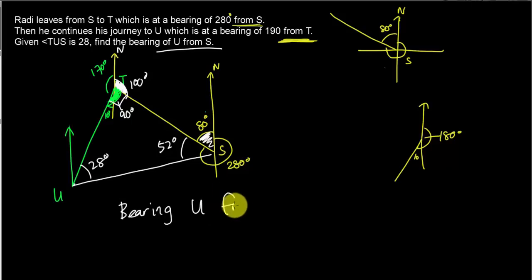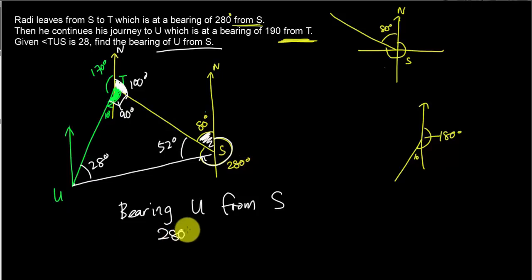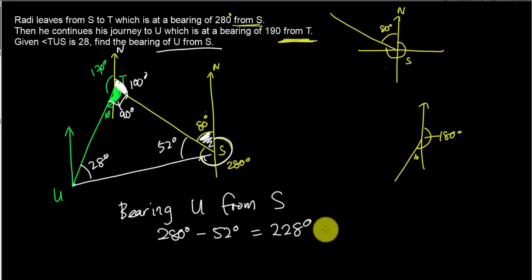With the angle at S in the triangle being 52°, I can get the final answer. The bearing of U from S is from north of S rotating clockwise to line SU, which is 280° minus 52° = 228°. That's the answer. I hope you learned something from this video. If you have any questions, post a comment below or text me on Telegram — I'll share the link. Thanks for watching!